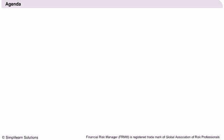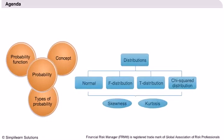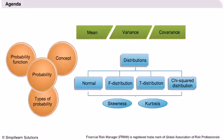Now we proceed towards understanding the basics of probability. We will start by learning about some concepts such as random variables, distribution, samples, etc. Probability is expectation founded upon partial knowledge. The principles of probability are based on statistics and are now used in numerous fields of finance. We will discuss unconditional and conditional probabilities, and evaluate how to handle joint probability. Some tools which are used for evaluating probability are random variables, events, sample distribution, and several tools of statistics.